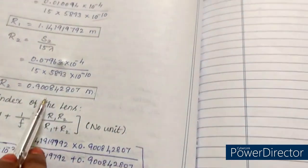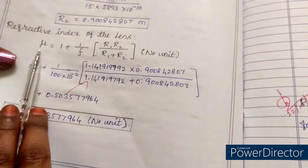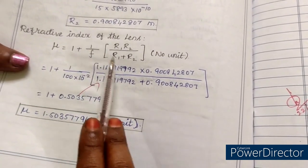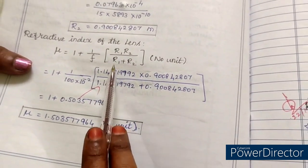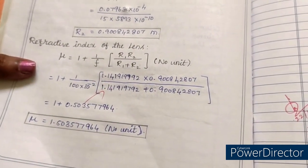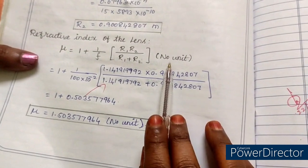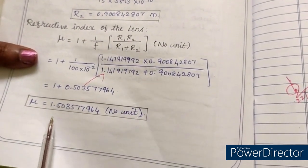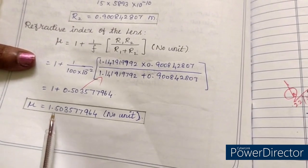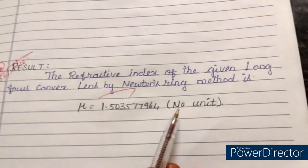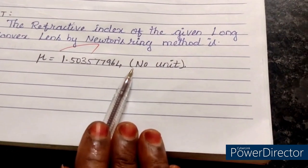After getting the value we will get the r1 and r2 values. Substituting both the r1 and r2 values in the refractive index of the lens formula, that is mu equals 1 plus 1 by f into r1 r2 divided by r1 plus r2. There is no unit because both the lens are having same unit. By having this formula we can calculate the value, that is 1.5 approximately, that is mu value. This is how we are going to do the results.